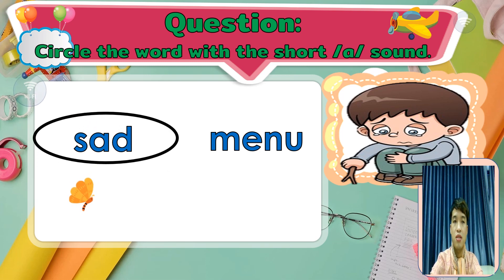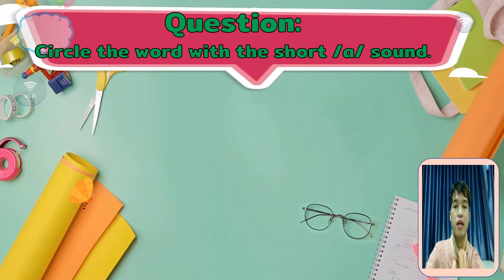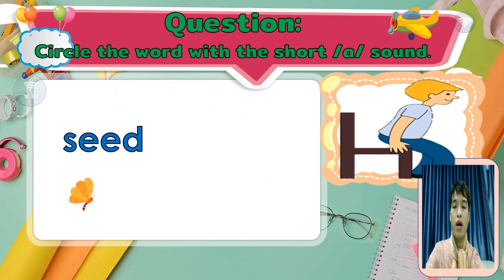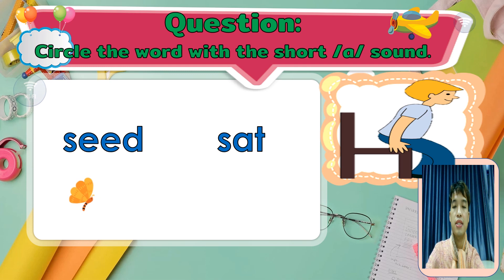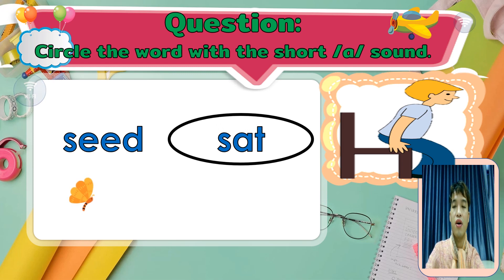We have here 'set.' The words are 'seat' and 'set.' Which word has the short A sound? Very good — set. Okay.